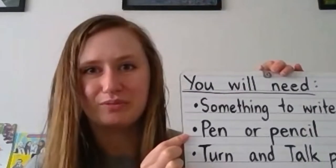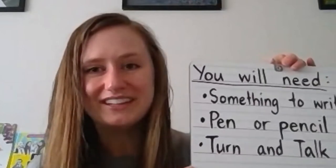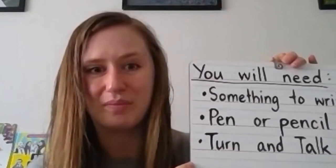For example, I have this little composition notebook that I'm going to use to write. I also just found some papers that had already been used on one side and I'm going to write on the back of those. You'll also need a pen or a pencil to write with and you'll need a turn and talk partner.